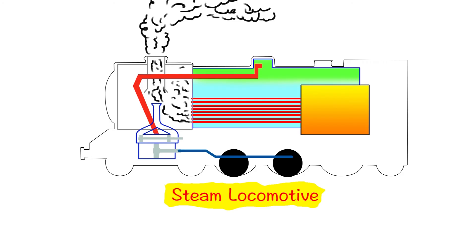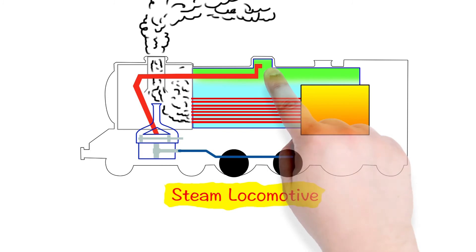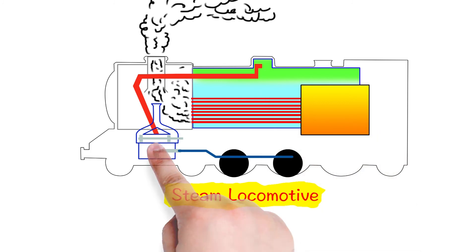Let's review how it works again. Workers shovel coal into the firebox. Hot gases pass through the pipes and boil the water in the tank. Steam is collected and pushed against the piston to get the wheels moving.